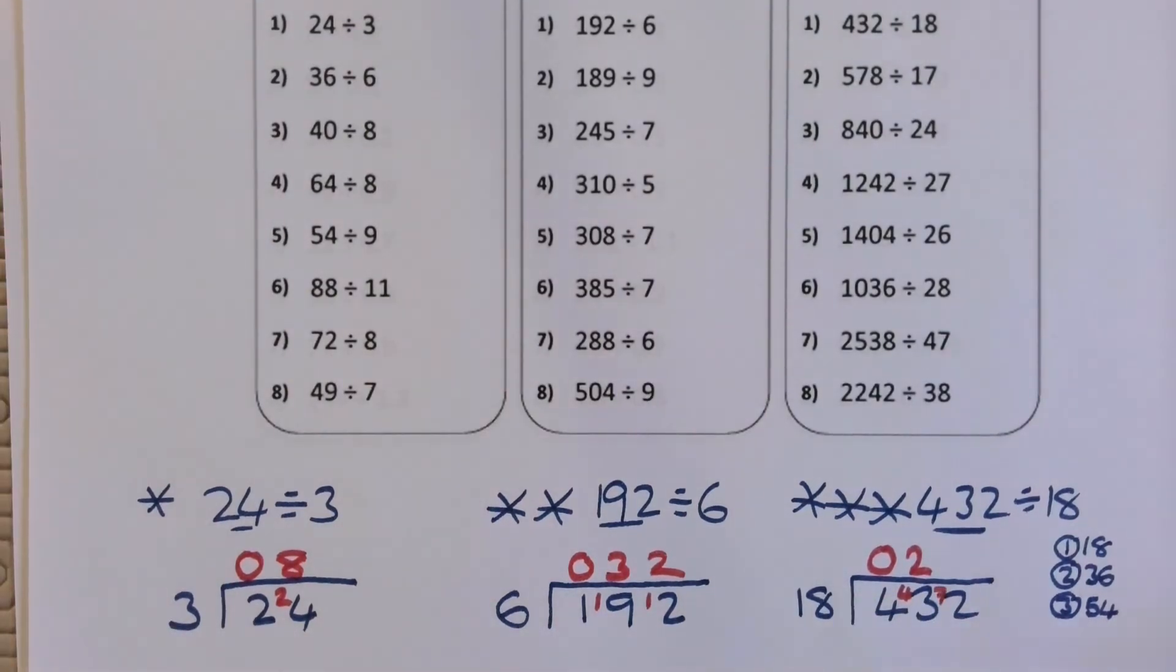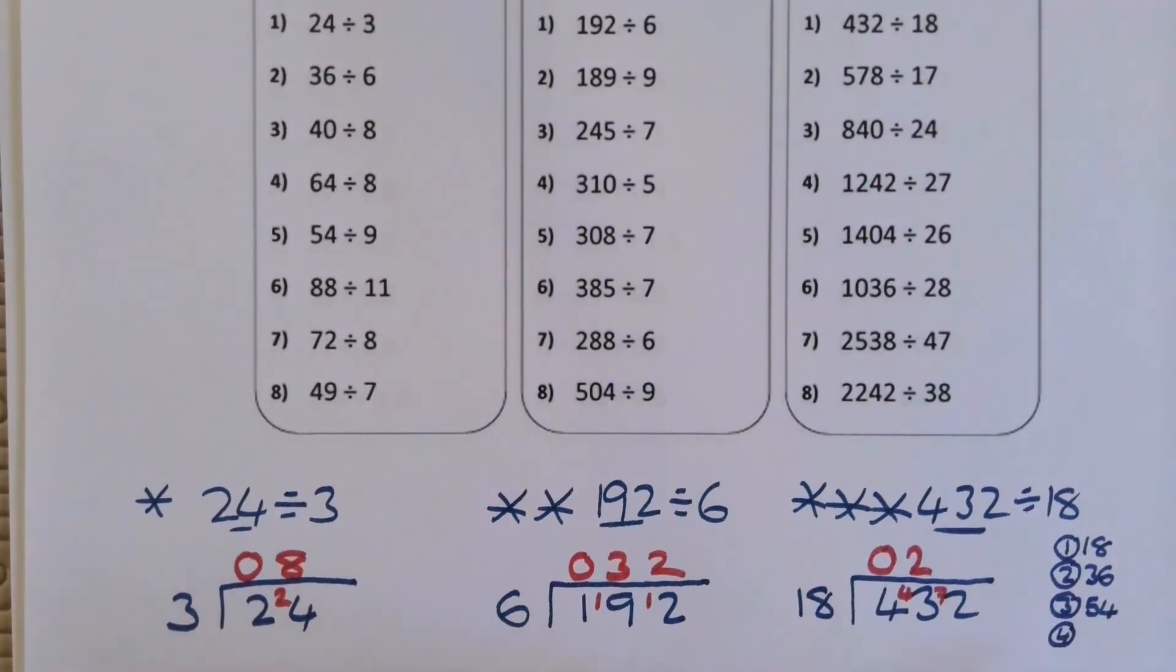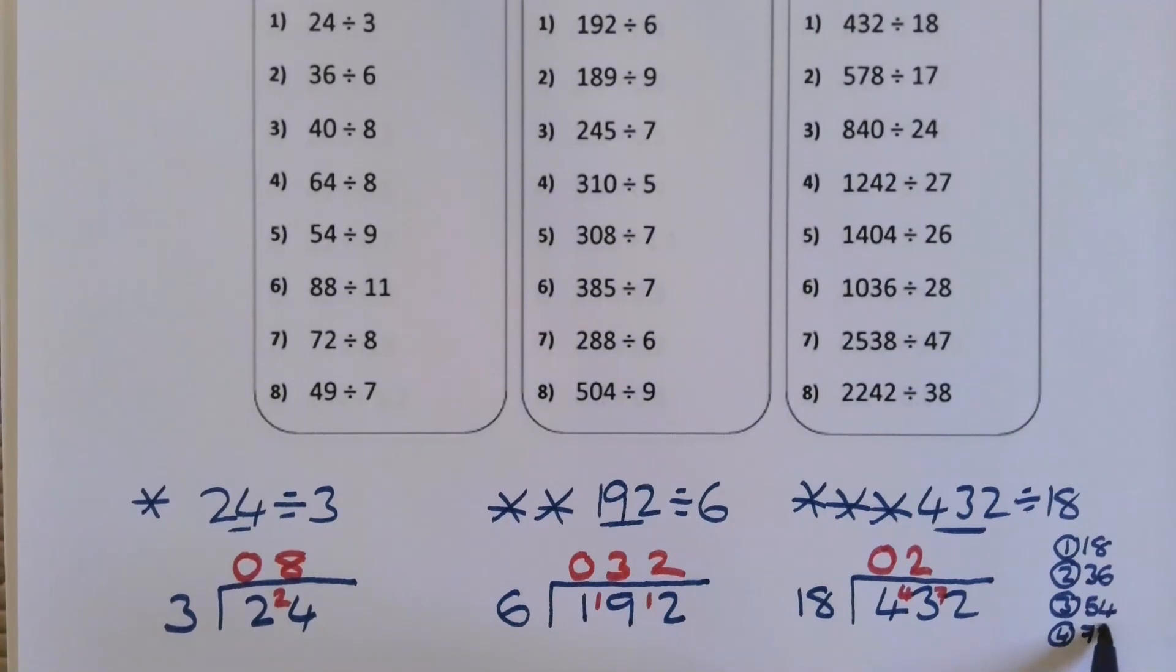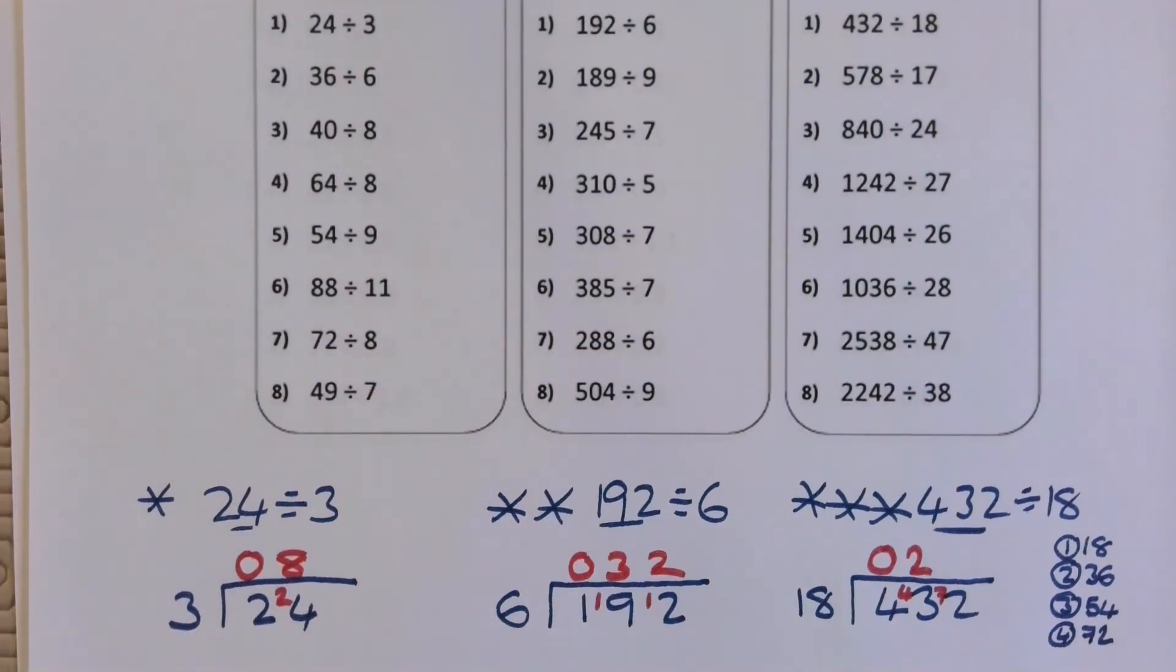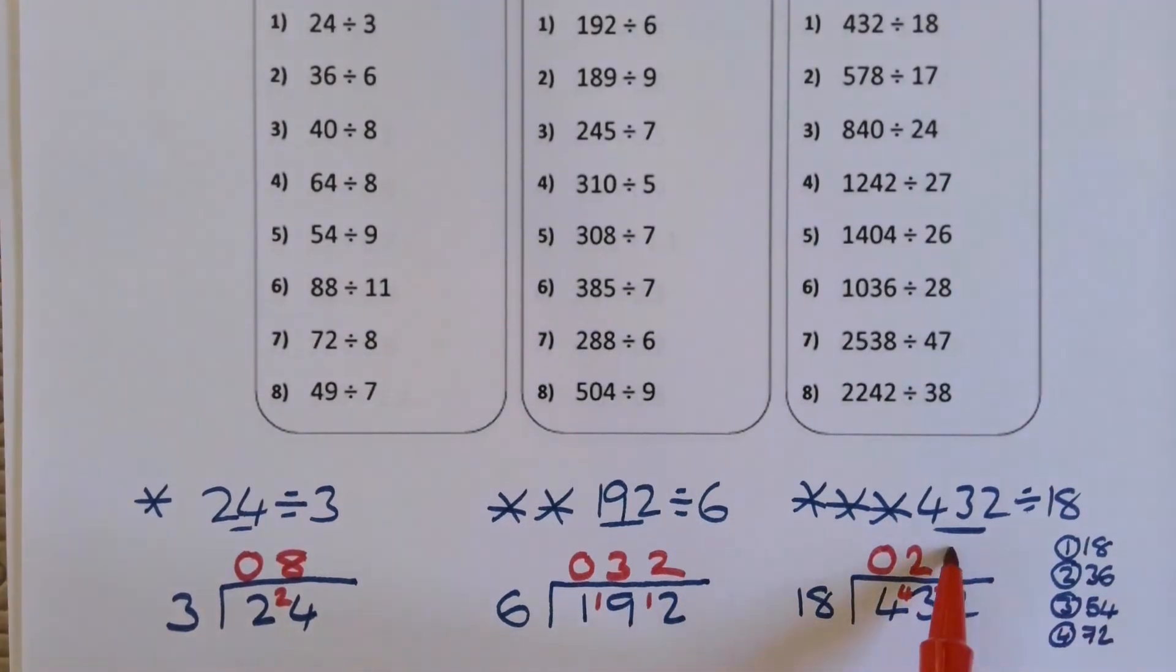Now we haven't got 72 in our times tables down the side here, so maybe we've got a little bit more work. So if we add 18 to 54, what's going to give us 72? That's lucky. There we go. So we know the answer now is 24.